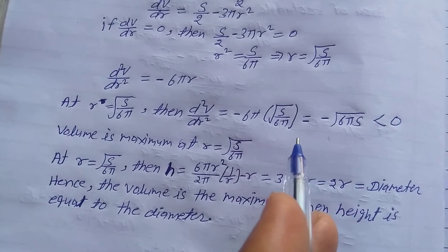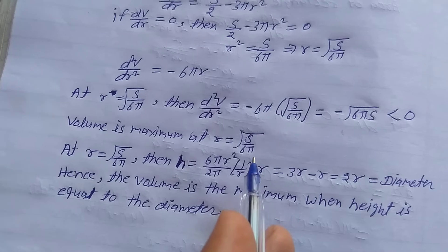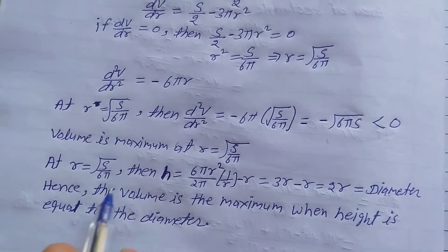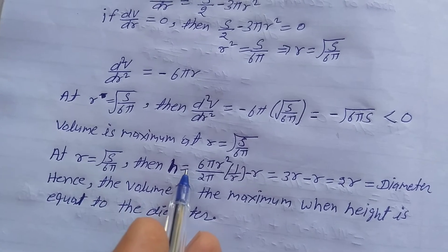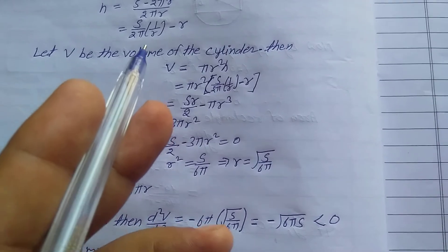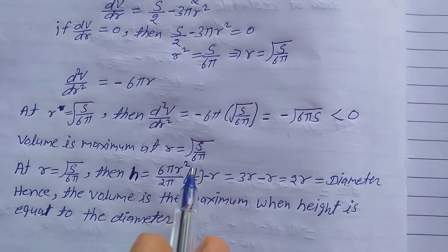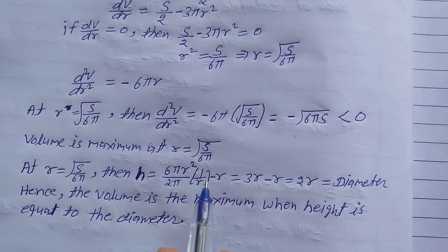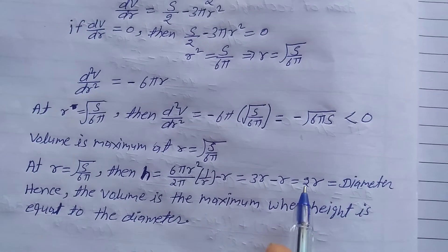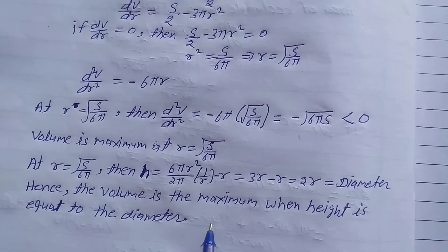By the second derivative test, volume is maximum at r = √(S/6π). Now finding the relation between h and r: substitute r into the height formula h = (S/2π)(1/r − r). Since S = 6πr², substituting gives h = (6πr²/2π)(1/r − r) = 3r × (1/r − r) = 3r·(1/r) − 3r² / r. Simplifying: 3 − ... = 3r − r = 2r, which is the diameter. Hence, volume is maximum when height equals the diameter.